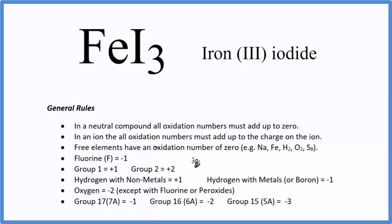We'll use these rules here, and the first rule we notice is that we have a neutral compound. This is a neutral compound because there's no plus or minus sign. In a neutral compound, all the oxidation numbers are going to add up to zero. So that's going to be important in a moment.